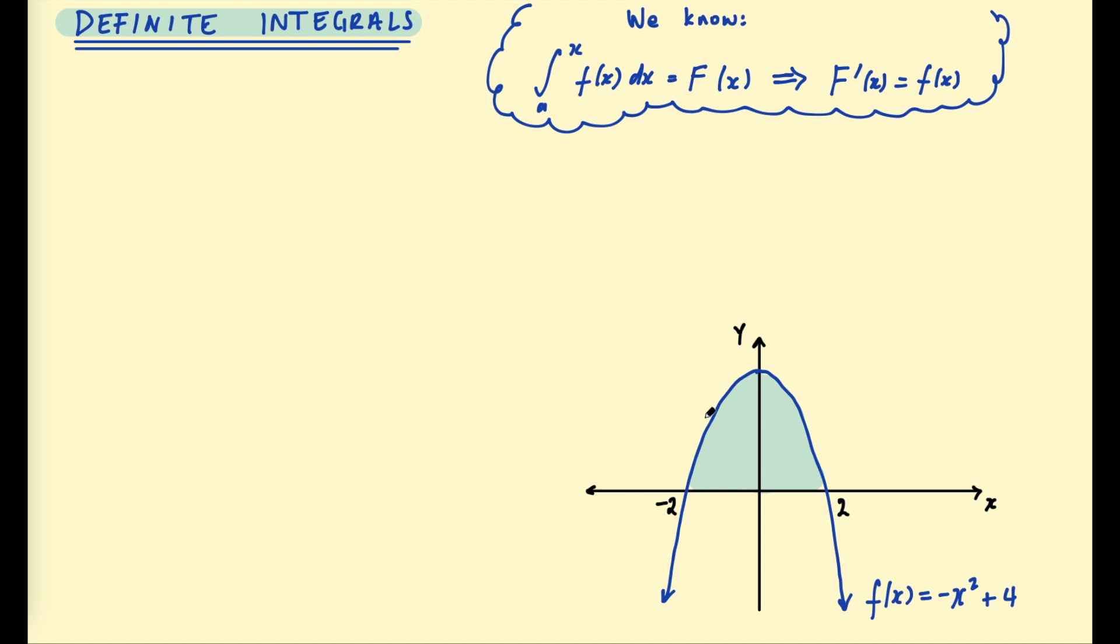So far we've looked at finding the exact area under a curve using a limit and we've also found a connection between integration and differentiation. In this video we're going to look at how we find an area using the antiderivative. We want to find this area under this curve negative x squared plus 4 from negative 2 to 2. Before we do that let's look at the general case.